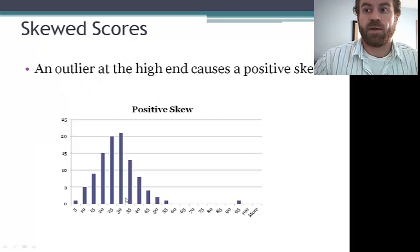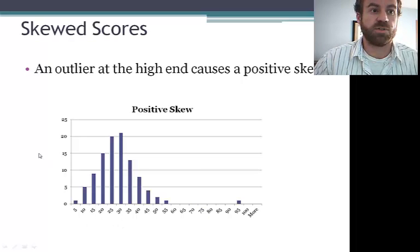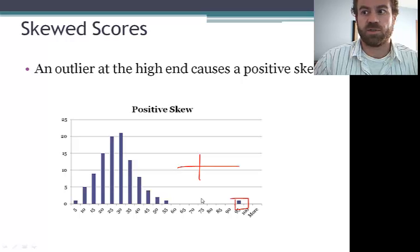Similarly, we can get an outlier, in this case, that has caused a positive skew. So again, because our outlier is up here at the high end, in this case we have a positive skew.